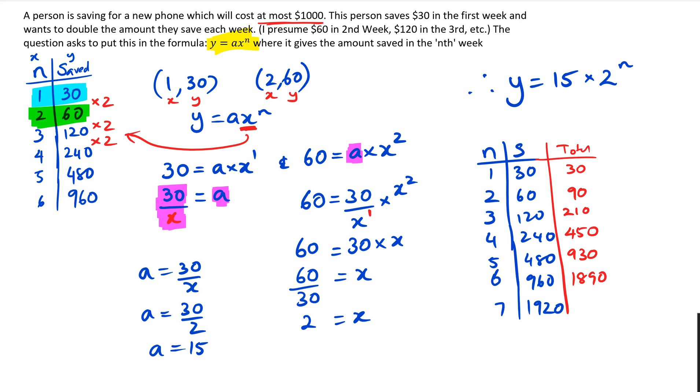So you can almost kind of assume if that question asks how many weeks did it actually take him to save to buy the phone, you can actually say it takes him till the end of the sixth week because after five weeks of saving he only has $930, but after six weeks he's got $1890.